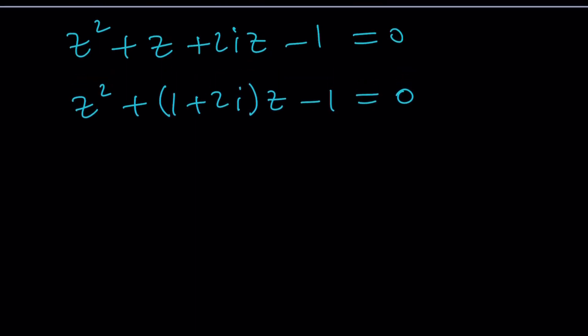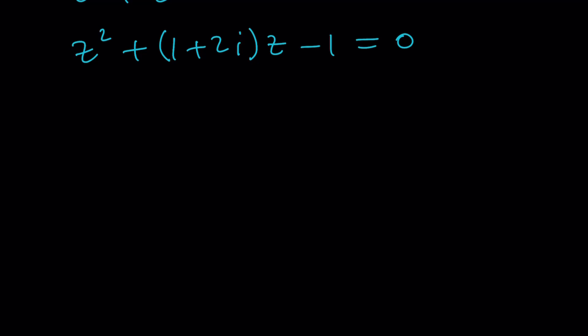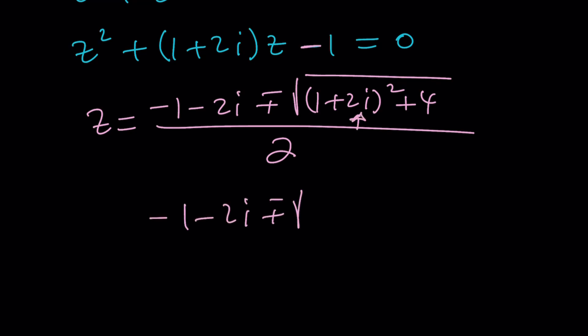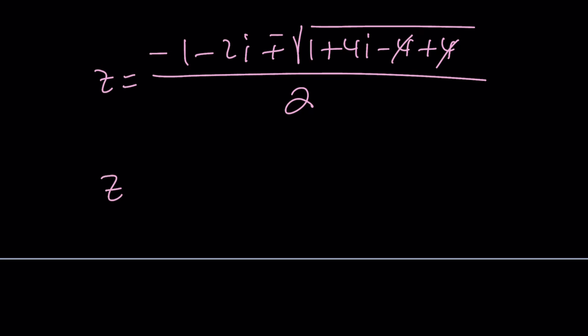To solve this problem we're going to use the quadratic formula. So z equals negative b plus or minus the square root of b squared. I'm going to square this and subtract 4ac, but c is negative so it's going to be plus 4, a is 1, all divided by 2. Let's square this and simplify. Plus or minus under the radical we get 1 plus 4i minus 4 plus 4. They cancel out and we end up with this.